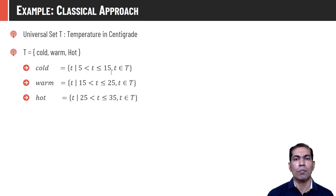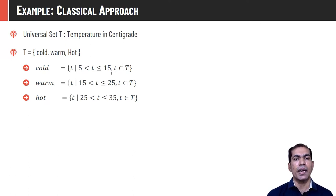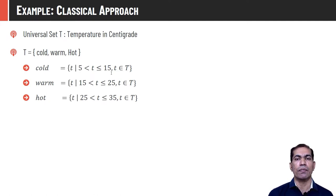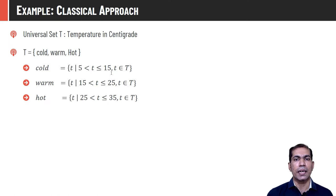Let capital T represent the set of all temperature values — that is our universe of discourse. From this, we derive three sets: cold, warm, and hot. If temperature is between 5 to 15, it is classified as cold. If between 15 to 25, it goes into the warm category. If between 25 to 35, it is classified as hot.